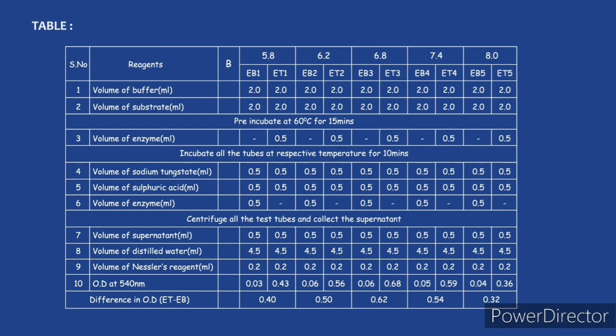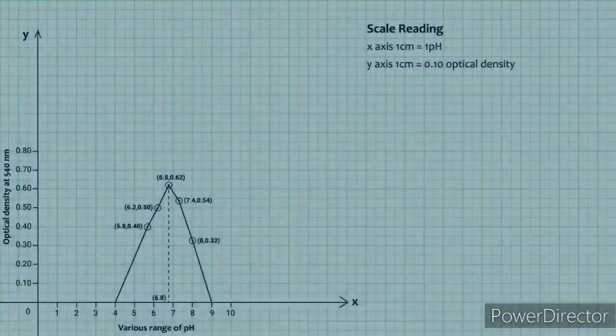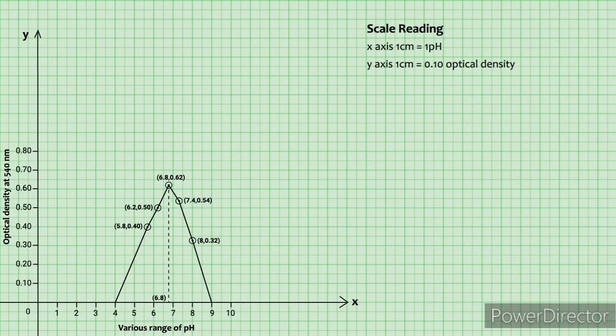Take a look at the table which shows all the vessels, and now the graph shows the various range of pH against the optical density. In this experiment, the optimal pH was found to be 6.8.